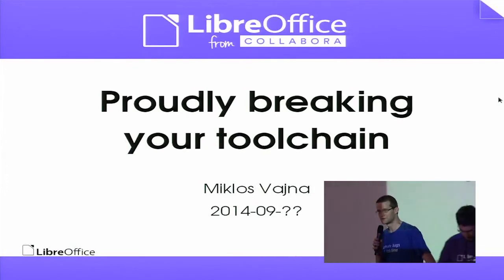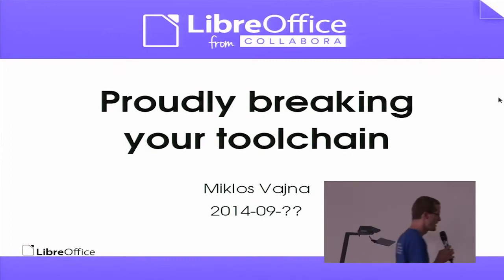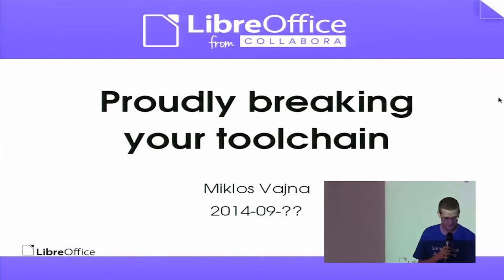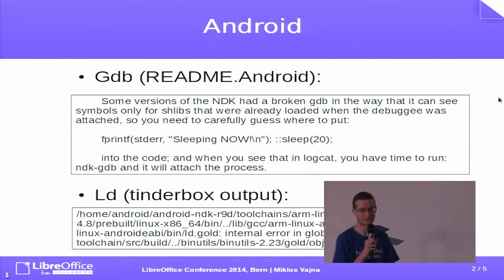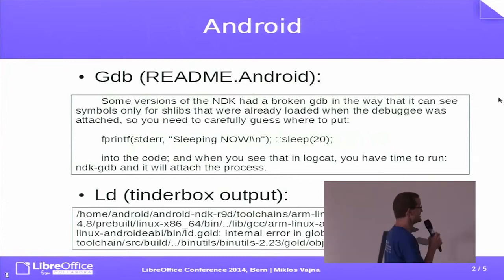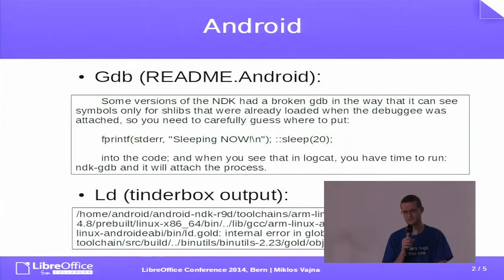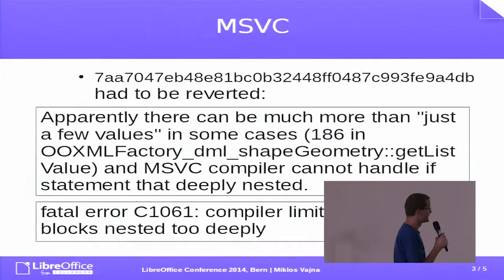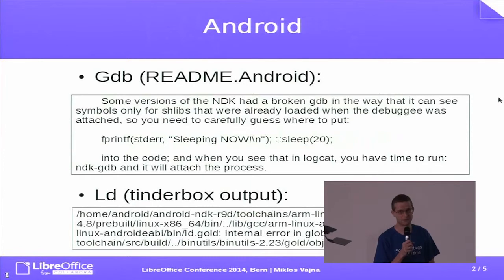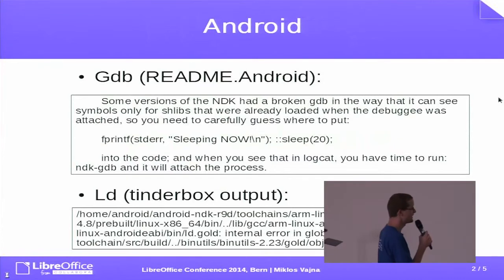Have you ever heard about LibreOffice breaking your toolchain for a long time? I forgot to put the proper date on the slide. So the first thing we break is Android — have you heard from Tor that Android is the new Windows? The first problem is that GDB has exactly the same problems on Android today that used to be true on normal PCs as well. If you would like to put a breakpoint in a function that's in a shared library that's not yet loaded, then you can't do that.